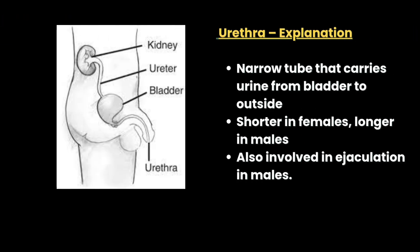The urethra is a narrow tube that carries urine from the bladder to outside the body. It is shorter in females and longer in males. It is also involved in ejaculation in males.